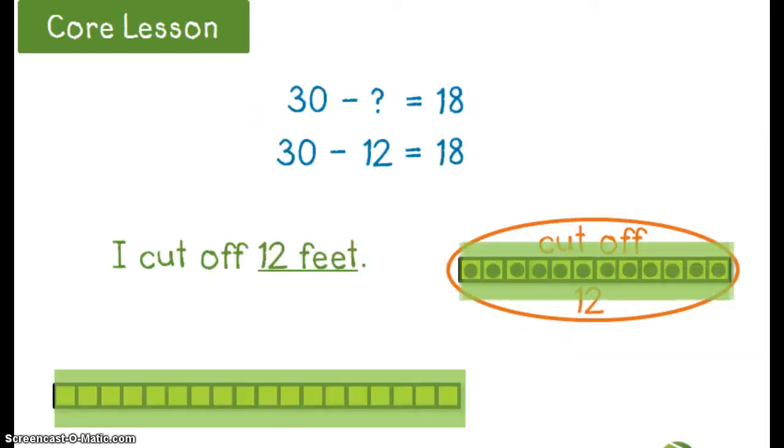Well, I can figure it out by saying 30 minus what number equals 18. So I can start at 30 and count backwards to 18. 30 minus 12 equals 18. So how much rope did I cut off? Well, I cut off 12 feet.